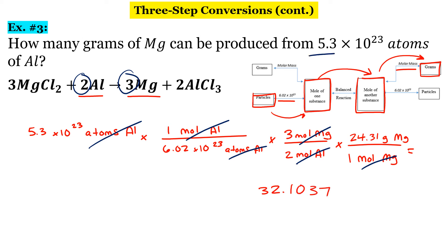I have two significant figures here, so my final answer should also have two. Are we keeping it as 32 or do we round up to 33? We're going to keep it as 32 — 32 grams of magnesium.